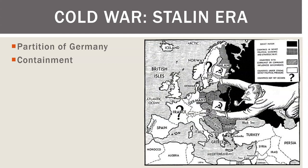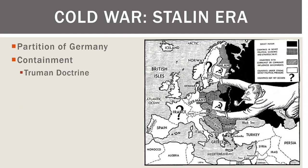A guy named Kennan came up with the idea of containment, but it was adopted by Truman — U.S. President Harry S. Truman. The idea is that the communists are all over the place; we can't stop them without a big war, but we can keep communism from spreading. That becomes the official policy of the United States: containment. That is known as the Truman Doctrine.